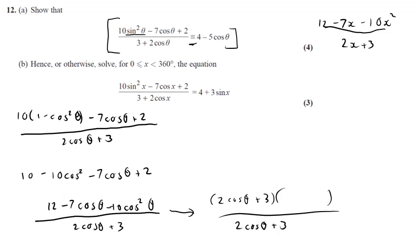Then the other term, it's 3 and we need to have 12 at the beginning, so this is going to be a 4. And then this is 2 cos theta. We need to have negative 10 cos squared theta, so minus 5 cos theta here like that. After that, this and this cancel out, and so we are left with 4 minus 5 cos theta.